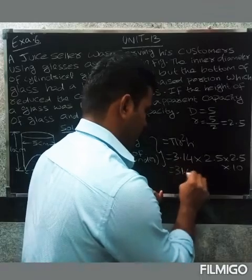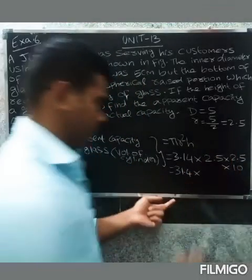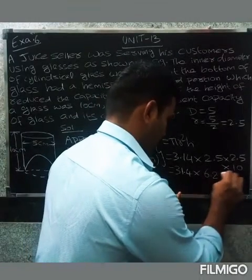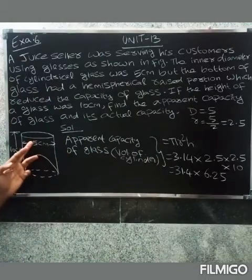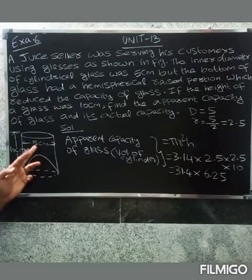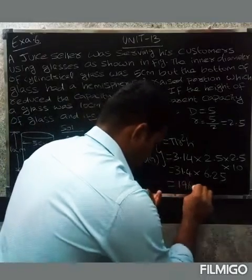So 3.14 × 10 equals 31.4, then 31.4 × 2.5 × 2.5. 2.5 squared equals 6.25, so 31.4 × 6.25.